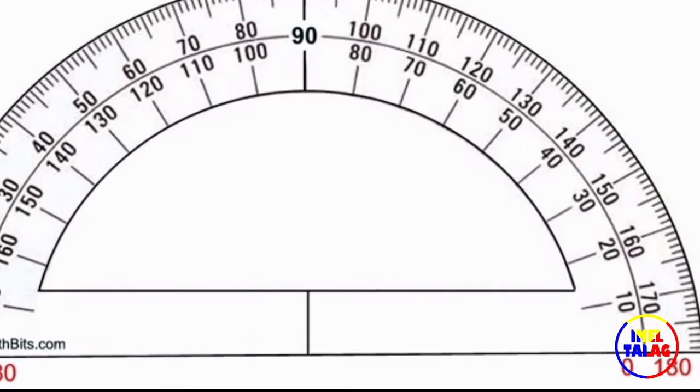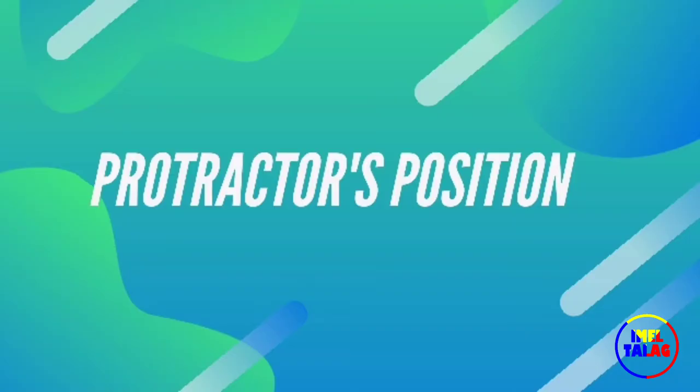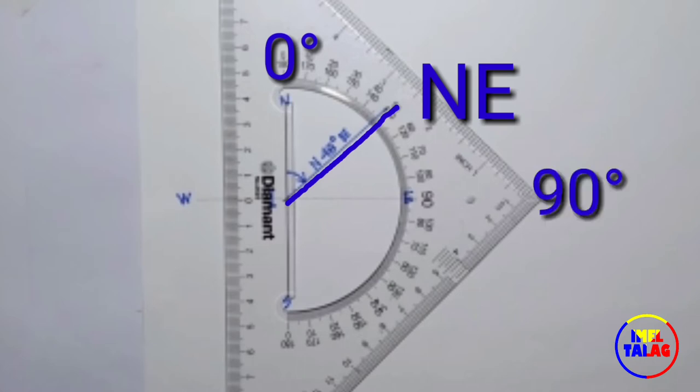Six: Basic rule of using protractor is always count up from zero degrees. Protractor position: If the line direction is going northeast, the zero degrees is placed on the north and 90 degrees is placed on the east.